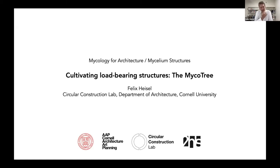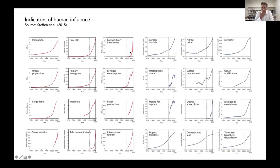When I start a talk like this, I think it's important that we all have the same understanding of why we approach ideas like this. I want to give you a couple of slides about the motivation behind the project. This first slide shows indicators of human influence by Steffen et al. It is devastating to see what happened around 1950, when all of these indicators — paper production, water use, population, GDP growth, tourism, transportation — all start an exponential growth.